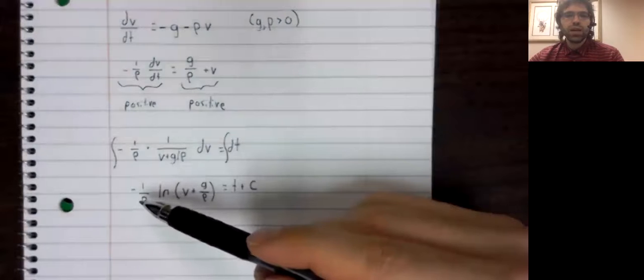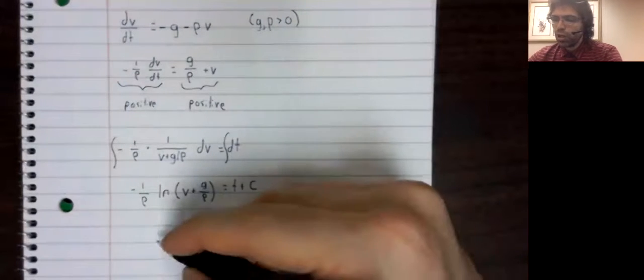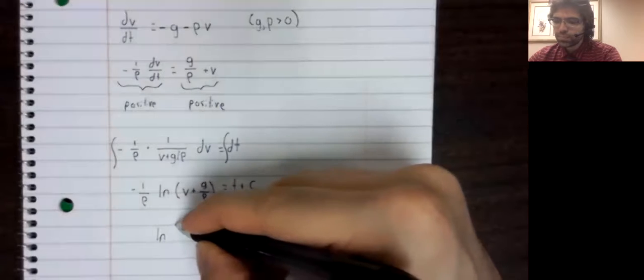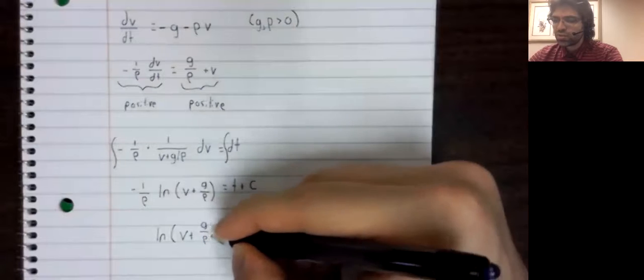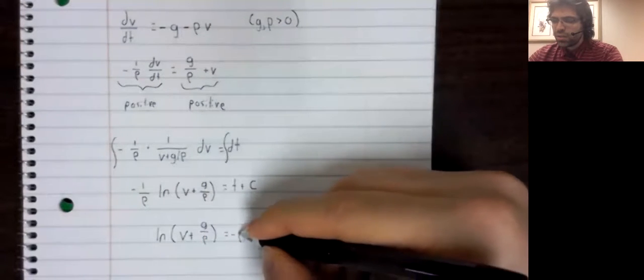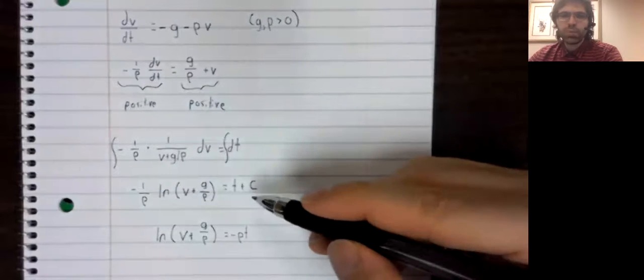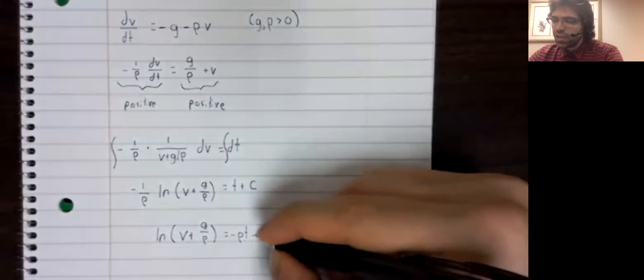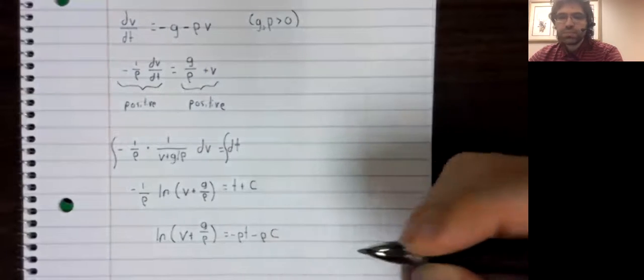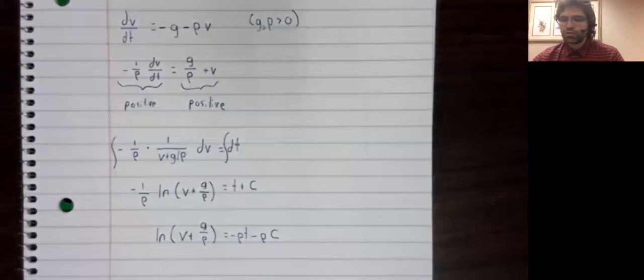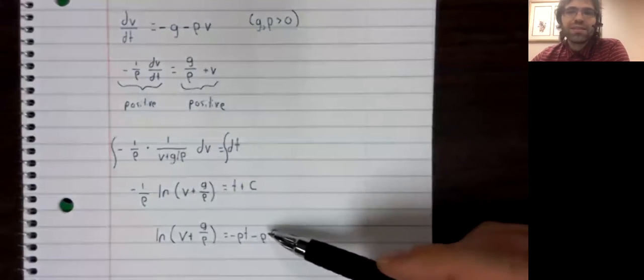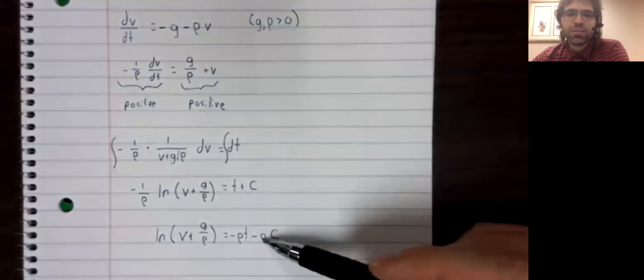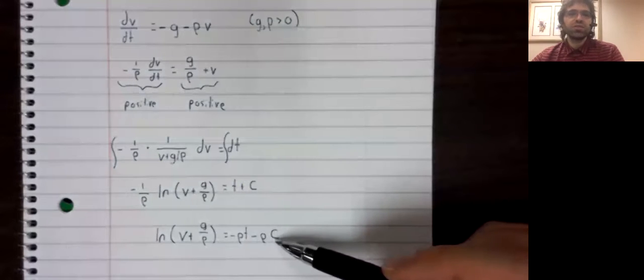Multiply both sides by negative rho. If C is an arbitrary constant, then negative rho C is also an arbitrary constant. But we're not going to write D here or anything like that. We're going to keep this constant and this constant separate.